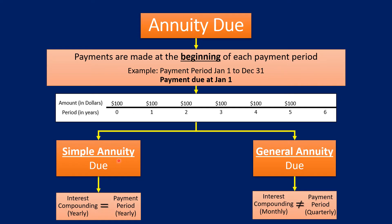There are two types of annuity dues: a simple annuity due and a general annuity due. In a simple annuity due, which is the topic of this video, the interest compounding frequency and the payment frequency are equal — if one is monthly, the other is monthly. In a general annuity due, the interest compounding frequency and the payment frequency are not equal — for example, one might be monthly and the other quarterly.